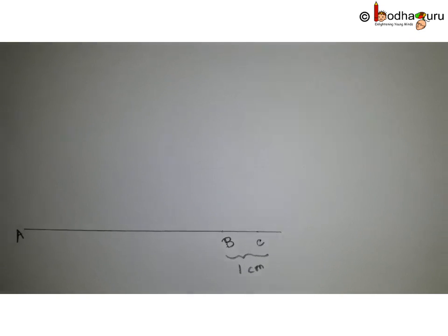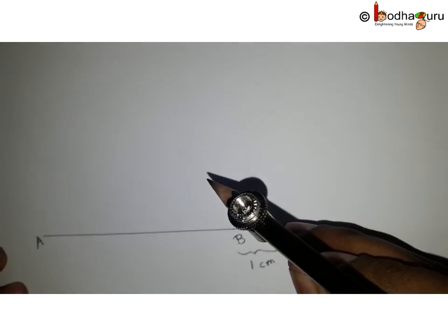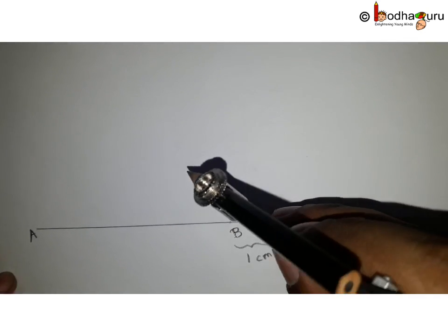We take point C, 1 centimeter away from B on the opposite side of A, such that BC is equal to 1 centimeter. So AC would be 9.3 plus 1 centimeter.